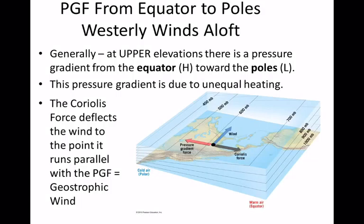Geostrophic winds travel between isobars, which at upper elevations are basically along lines of latitude. Surface isobars make those cool bullseyes, but isobars at upper elevations kind of do that too.